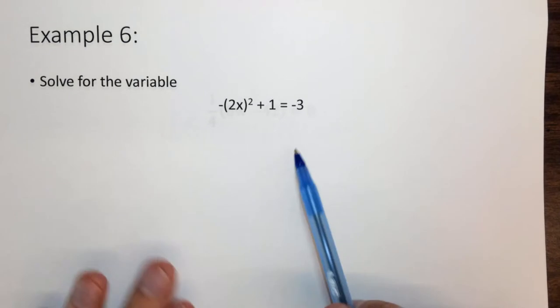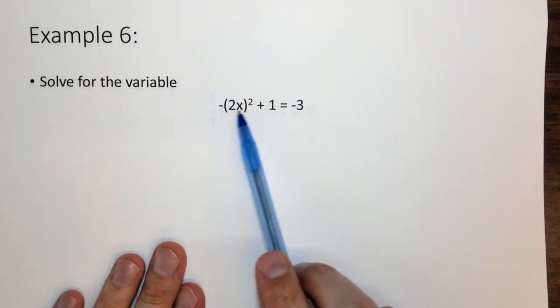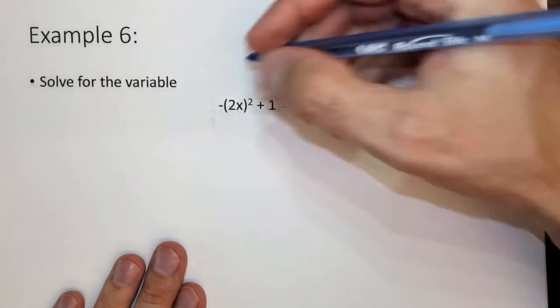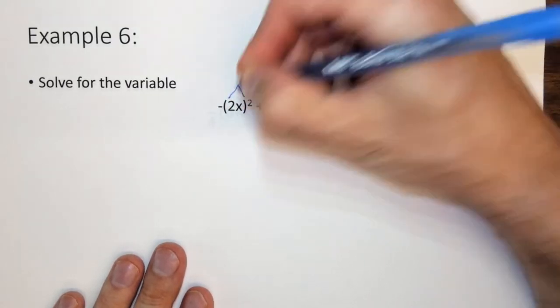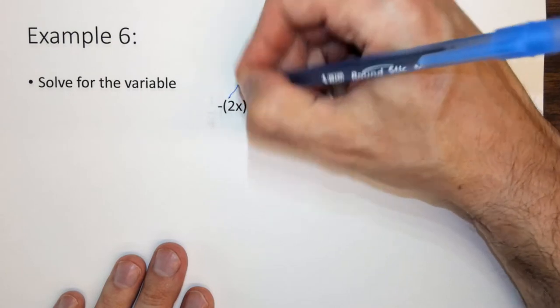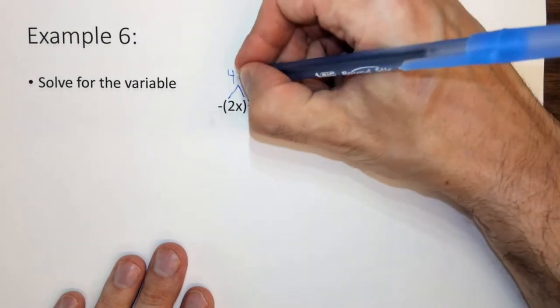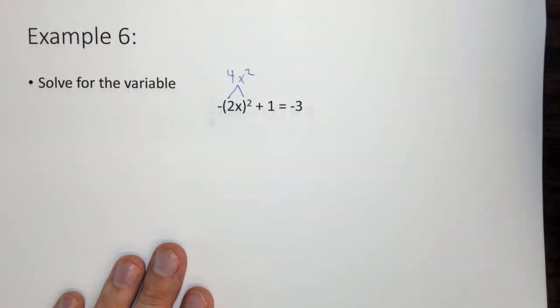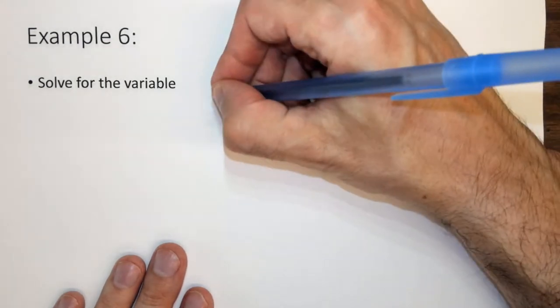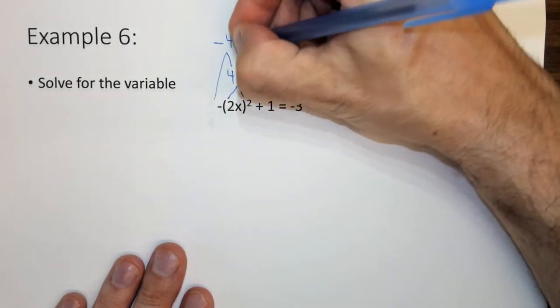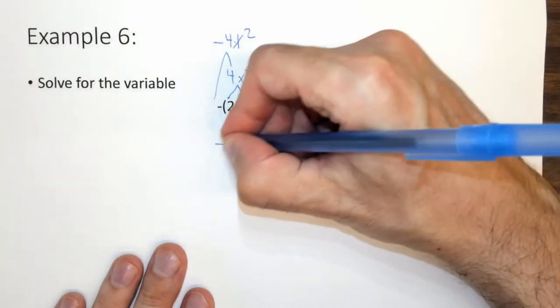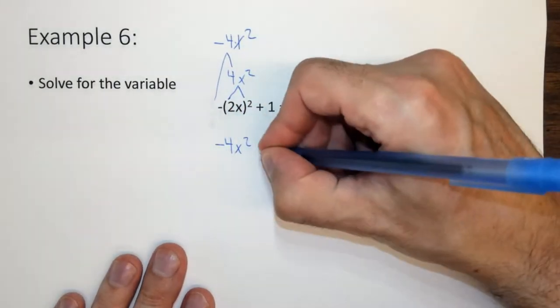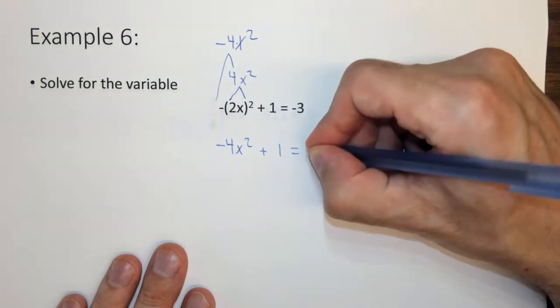Here we have now this whole 2x squared and it's multiplied by negative 1. So we need to square both, square the x and square the 2. 2x squared becomes 2 squared, which is 4, times x squared, which is just x squared. Because it's multiplied by negative 1, we need to multiply by negative 1, so it's negative 4x squared. Now we have the only variable. Negative 4x squared plus 1 equals negative 3.